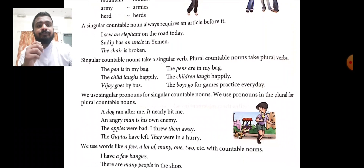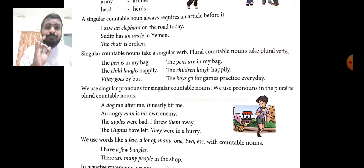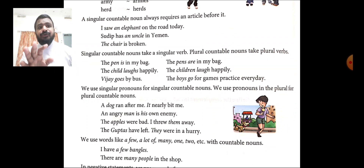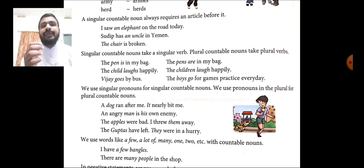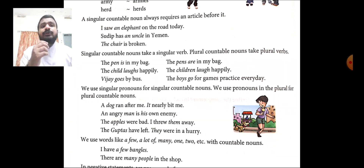The second rule: singular countable nouns take a singular verb; plural countable nouns take a plural verb. For example: 'The pen is in my bag' — since pen is a singular countable noun, we use 'is.' But 'The pens are in my bag' — since pens is plural, we use 'are.' Similarly, 'The child laughs happily' uses the singular verb, while 'The children laugh happily' uses the plural verb.